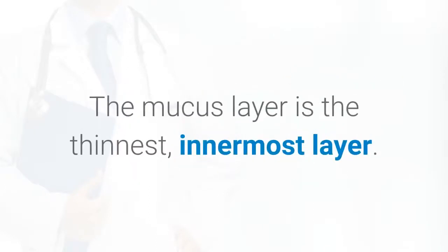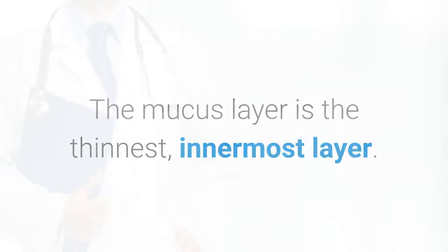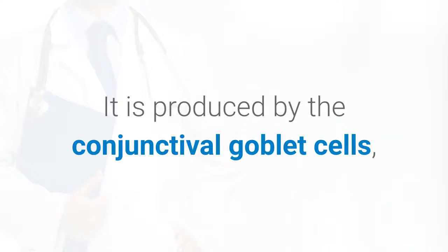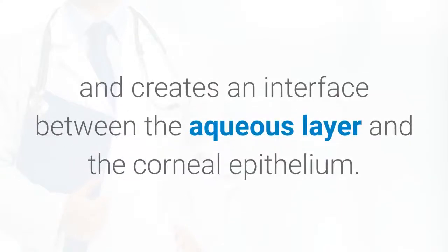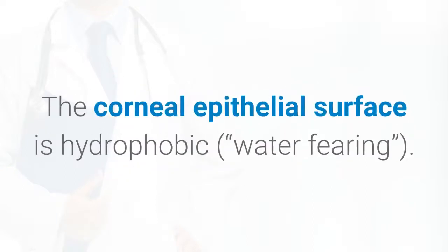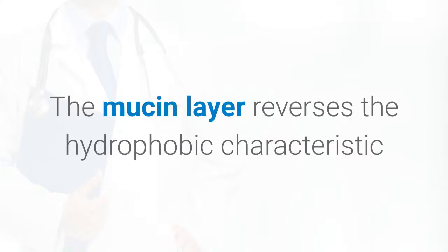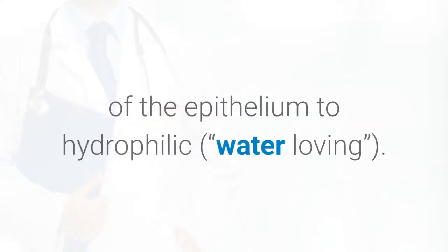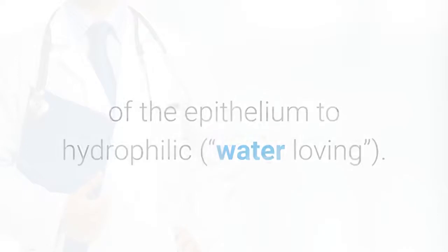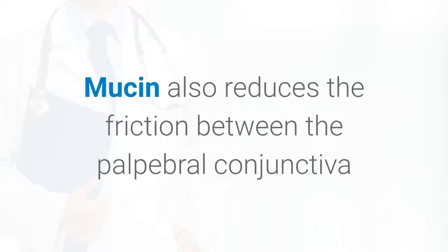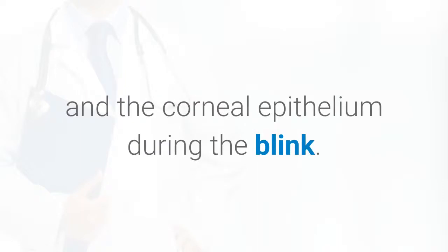The mucous layer is the thinnest, innermost layer. It is produced by the conjunctival goblet cells, and creates an interface between the aqueous layer and the corneal epithelium. The corneal epithelial surface is hydrophobic, meaning water-fearing. The mucin layer reverses the hydrophobic characteristic of the epithelium to hydrophilic, or water-loving. Mucin also reduces the friction between the palpebral conjunctiva and the corneal epithelium during the blink.